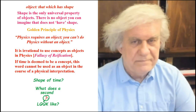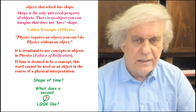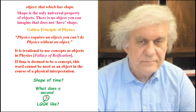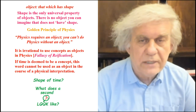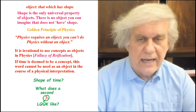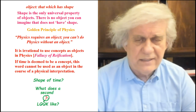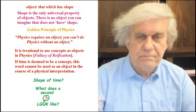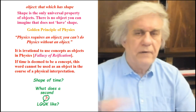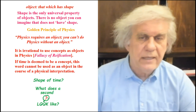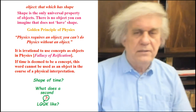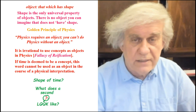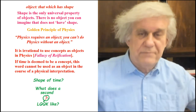Object: that which has shape. If you don't like this definition, you must come up with a better one and defend it. In science we don't vote or appeal to tradition — we defend our definitions. Shape is the only universal property of objects; all objects have shape. The golden principle of physics: you can't do physics without an object. It is irrational to use concepts as objects — that's the fallacy of reification. You cannot take love and turn it into a heart, or intelligence into a brain, in physics.